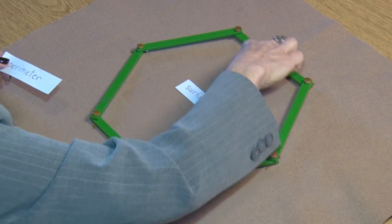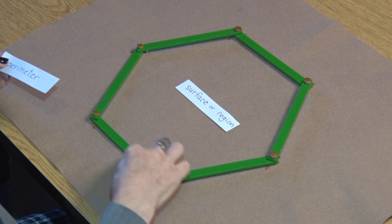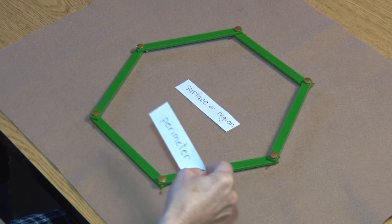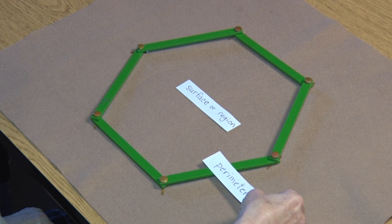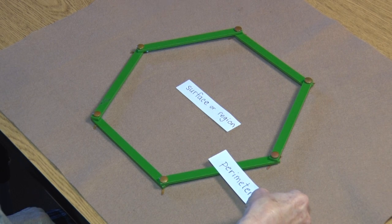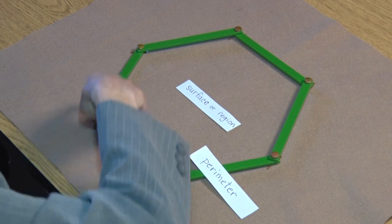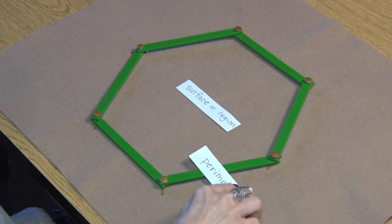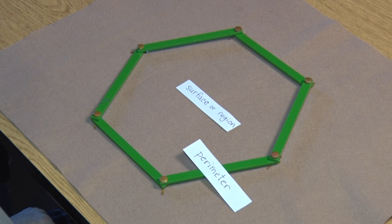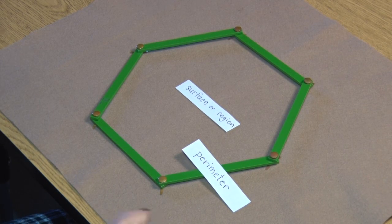The sum of the sides, the length of the sides, that distance is called the perimeter. So if I added the length of each of these green sticks together, that would give me the perimeter of this regular polygon.